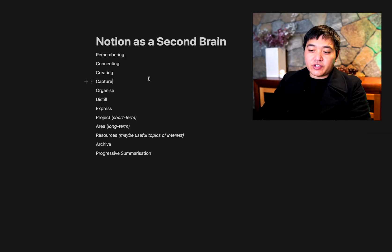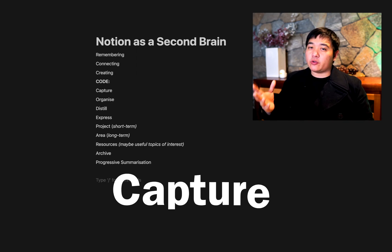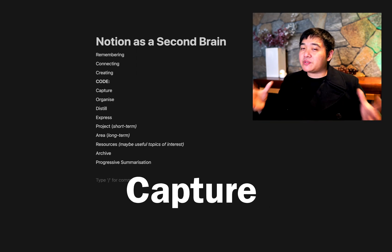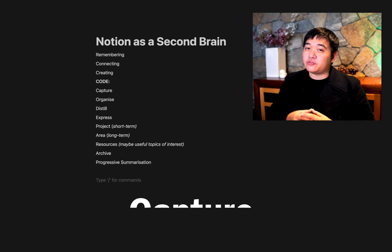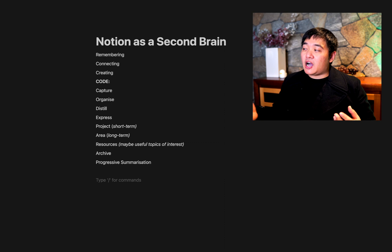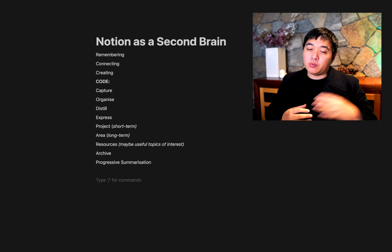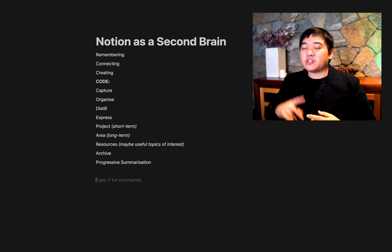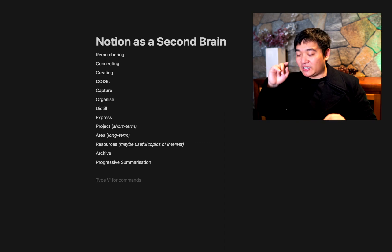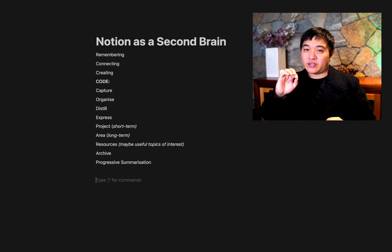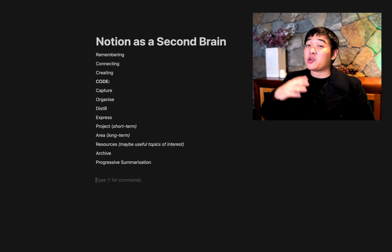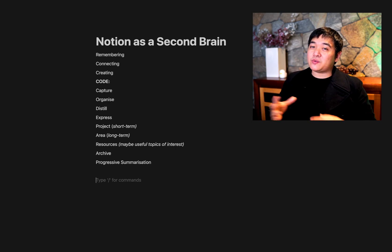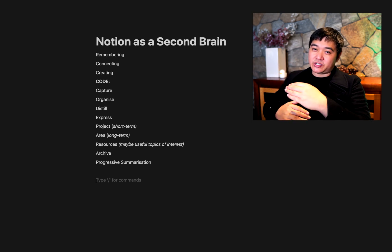The first part of the CODE method is to capture any piece of information you've thought of. It can be a conversation you've had with a friend, a web article, or a book you've read. You want one place to go to immediately so you can capture that piece of information. I'm going to go pretty fast in this video because it's a hybrid summary of a book plus Notion.